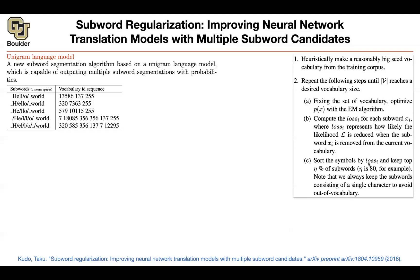You associate a loss to every single subword in your vocabulary, sort them by loss, and keep the top 80% — equivalently removing the 20% least important subwords. You might worry about out-of-vocabulary words; to fix that, you include every single character in your vocabulary. That way, if a word doesn't decompose using your dictionary, you fall back to its individual characters in the worst case.